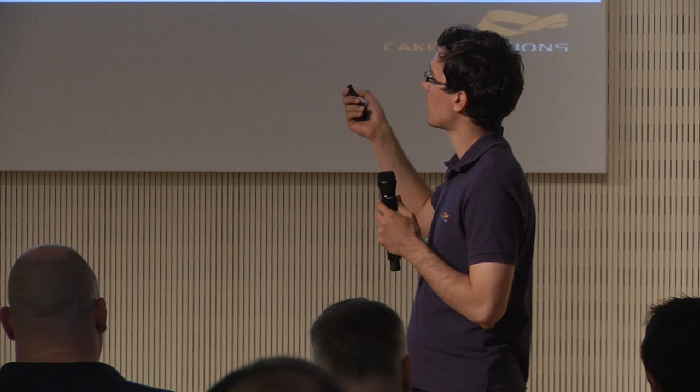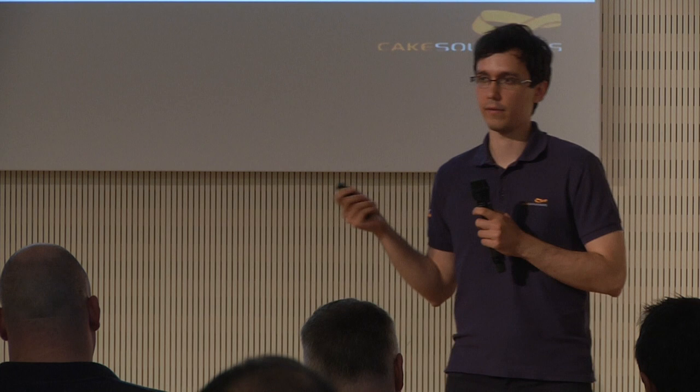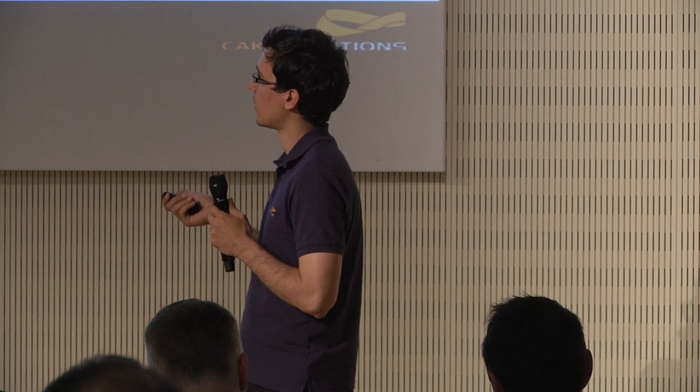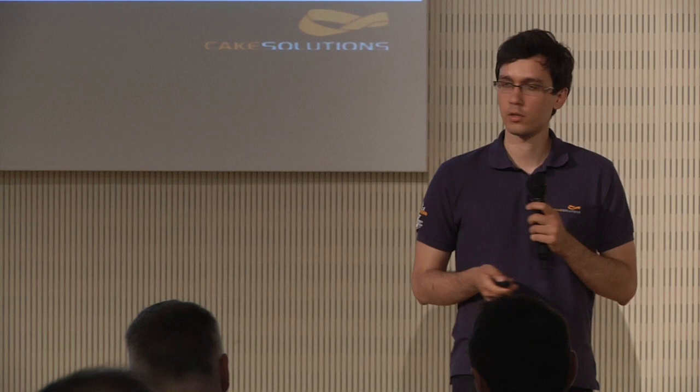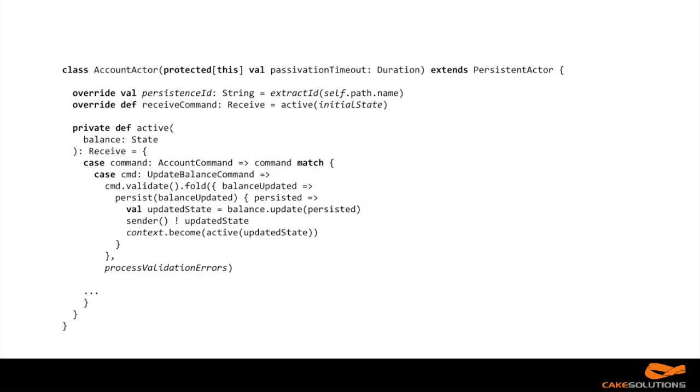Akka Persistence provides an event-sourced journal of events. Every time a message is received, we store an event at the end of this journal. If the actor fails, it can replay the messages in the journal and reconstruct the previous state. This gives us resiliency in case of failure, rebalancing, or other scenarios.